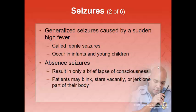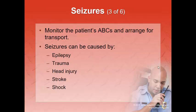An absent seizure is just a brief lapse of consciousness. Patients may be staring, they may blink, or they may have a seizure in one part of their body — it's called an absent seizure. Usually these people know that they have this condition, like a petit mal seizure or a focal motor seizure in one part of their body. There's not usually much risk unless they're driving. With generalized seizures, the problem is they're not adequately breathing — the longer the seizure, the longer they go without breathing, making them low in oxygen.